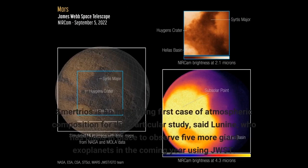Smertrios is an interesting first case of atmospheric composition for this particular study, said Lunine, who has plans in place to observe five more giant exoplanets in the coming year using JWST.